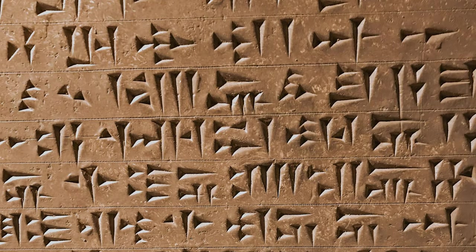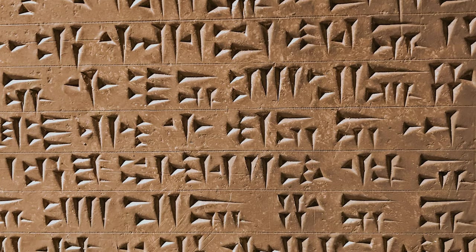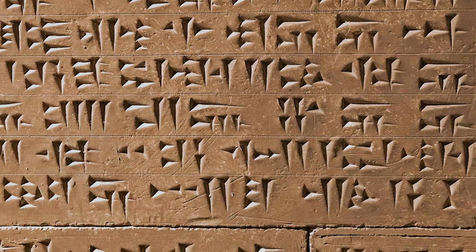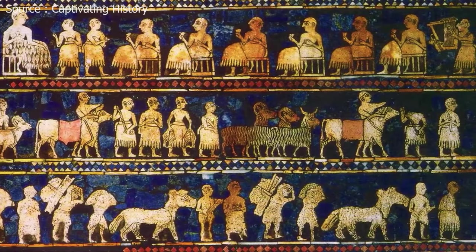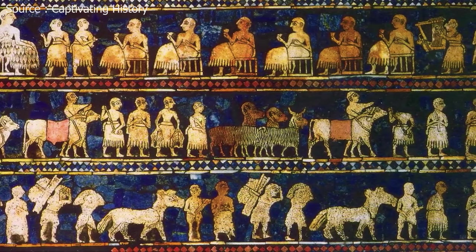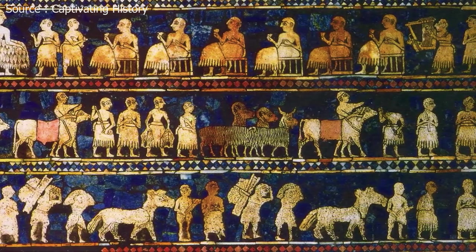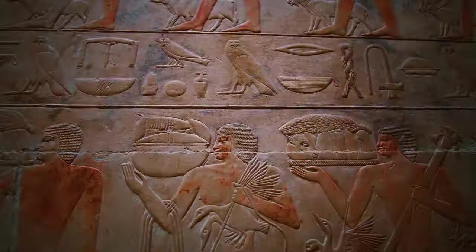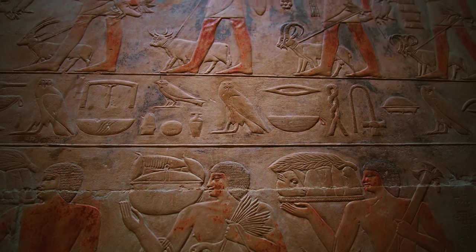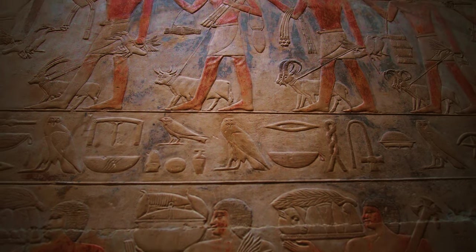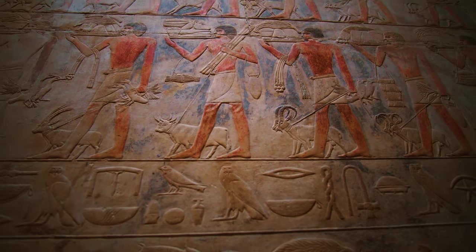Cuneiform was a complex system with over 600 symbols representing words and concepts. This made it difficult to learn and limited its use to a select few who were trained in its use. As a result, scribes who were highly trained individuals were in high demand and held important positions in Sumerian society.